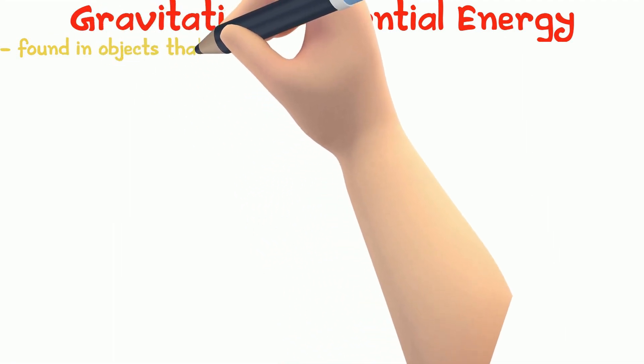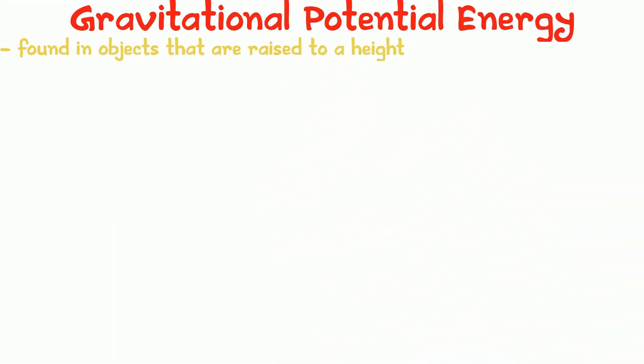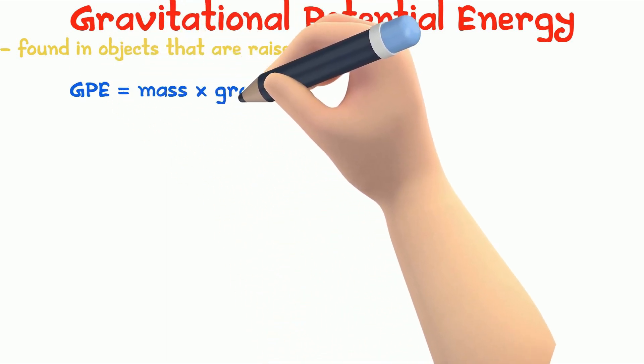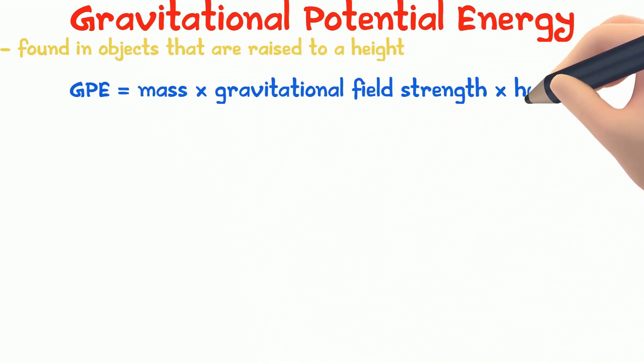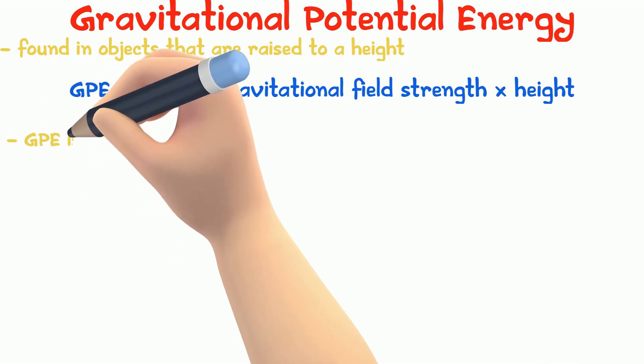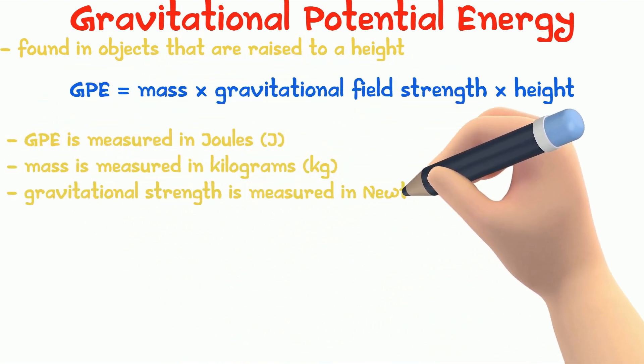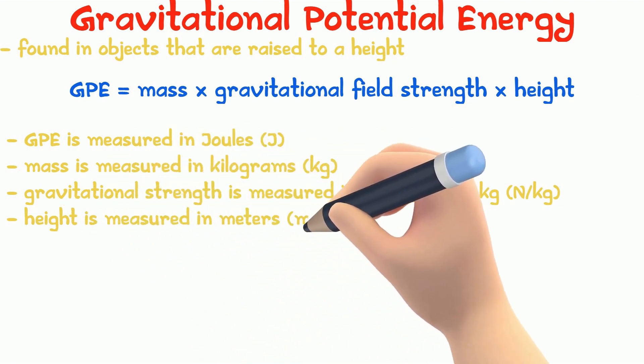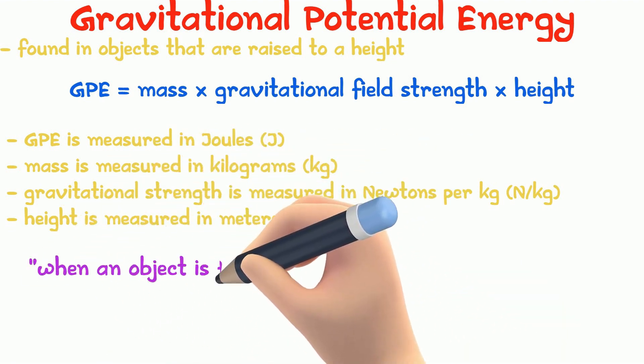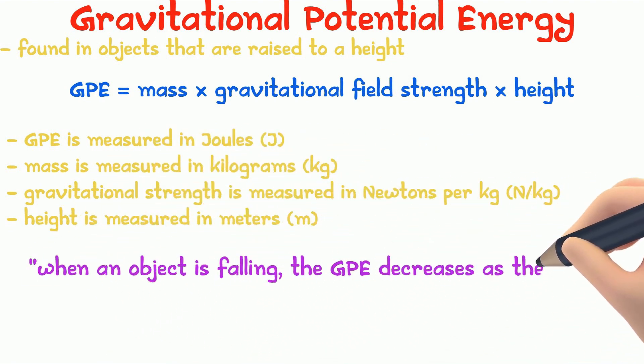For example, gravitational potential energy is found in objects that are raised to a height. GPE can be found using the equation GPE equals mass into gravitational field strength into height. GPE is measured in joules, mass in kilograms, field strength in newtons per kilogram, and height in meters. When an object falls, it reduces the GPE because the height is decreasing.